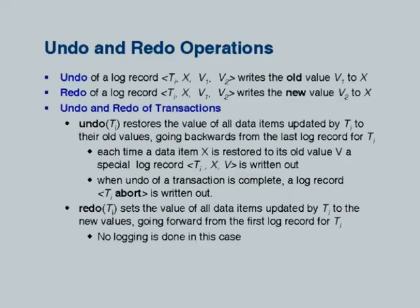Then it writes a special log record Ti abort. For all practical purposes, Ti abort and Ti commit are almost identical — both say the transaction is done. When you roll back, the database system issues updates which physically bring values back to the original and then completes. These log records need to be written because if the database crashes after the undo, when you come back up without these log records you cannot guarantee the undos were actually reflected on disk.